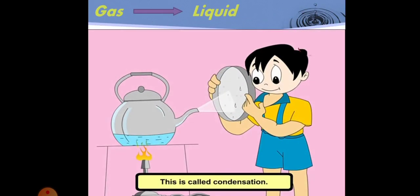Next, gas changes into liquid. If we cool water vapor, it again changes into the liquid state of water. When you hold a cold steel plate over a pot of boiling water, you will see tiny drops of water condensing on it. So the process by which a gas changes into a liquid on cooling is called condensation.